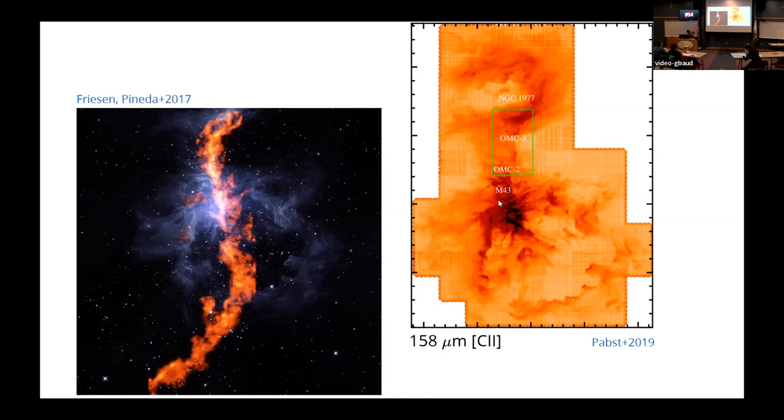And you also see other things like, for example, this bright ring, the bubble around the massive stars. It shows up much more clearly in C+ than in the molecular gas, in particular in ammonia, where you don't really see any of the gas associated with this.